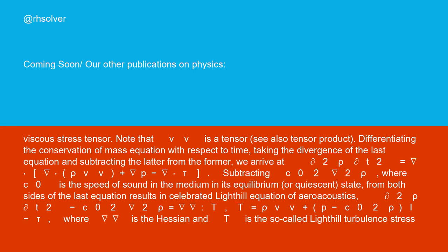∂²ρ/∂t² - c₀²∇²ρ = ∇·∇·T, where T = ρvv + (p - c₀²ρ)I - τ, where ∇·∇ is the Hessian and T is the so-called Lighthill turbulence stress tensor for the acoustic field.